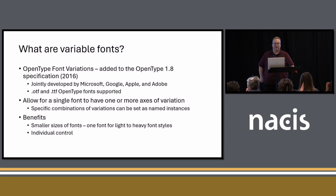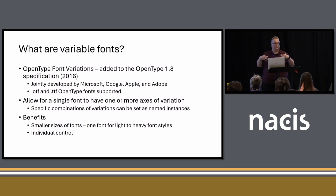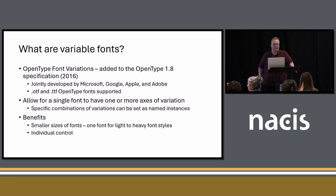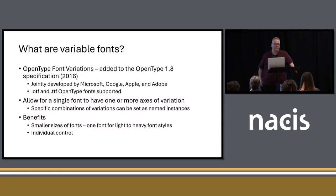Variable fonts allow a single font to have more than one axis of variation — you can have a font that morphs itself into different representations. Specific combinations of these variations can be set as named instances, and those named instances will be shown in applications so you can select regular, bold, narrow, and so on. The benefit is smaller font file sizes, which is especially important when downloading web fonts. You can have one single font file covering light to very heavy font styles, and you also get a lot of individual control over variations.